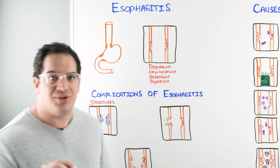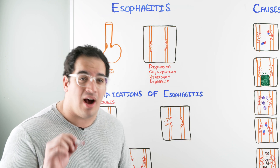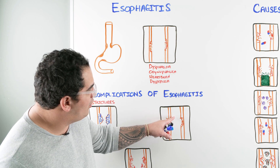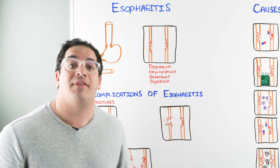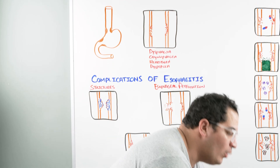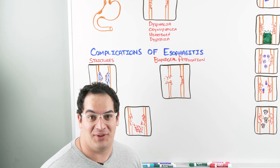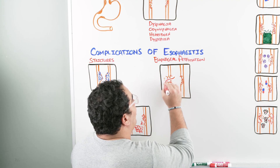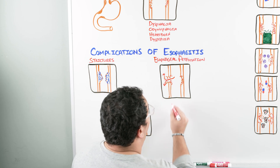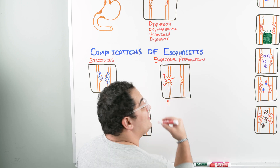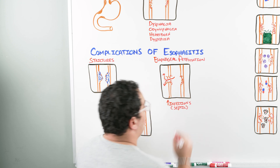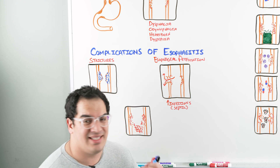The next and probably most scary complication, especially with caustic-induced esophagitis, is that the agents can be so strong they literally rip a hole through the esophagus — this is called esophageal perforation. If you perforate the esophagus, air and agents can enter the mediastinum, and this can literally lead to a patient becoming septic. Watch out for an increased white blood cell count, fever, and hypotension — it's terrifying.